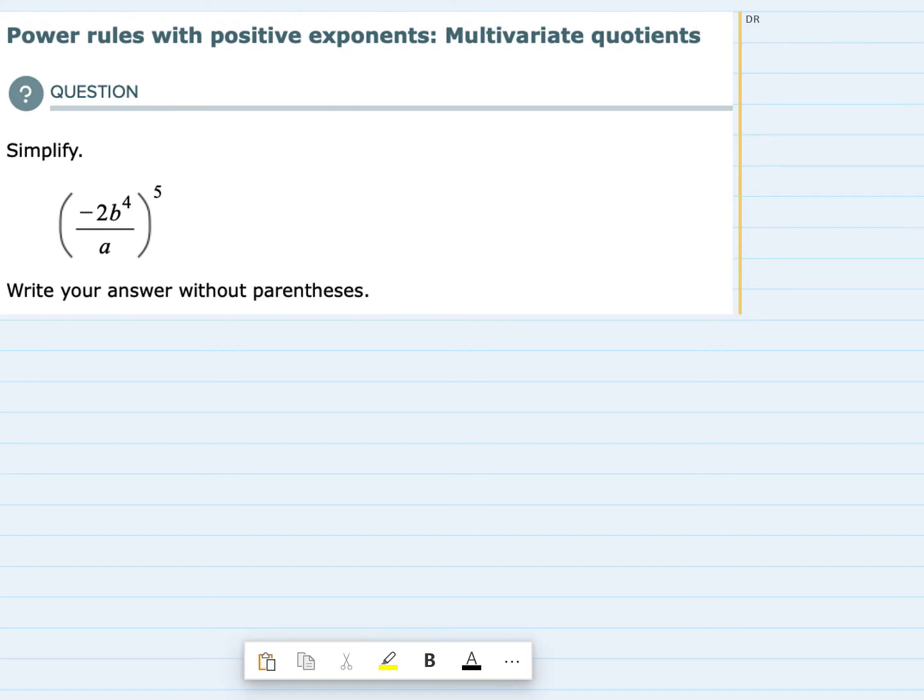I'm going to rewrite this and raise each element to the fifth power. The negative 2 needs to be raised to the fifth power. That's in the top of the expression.